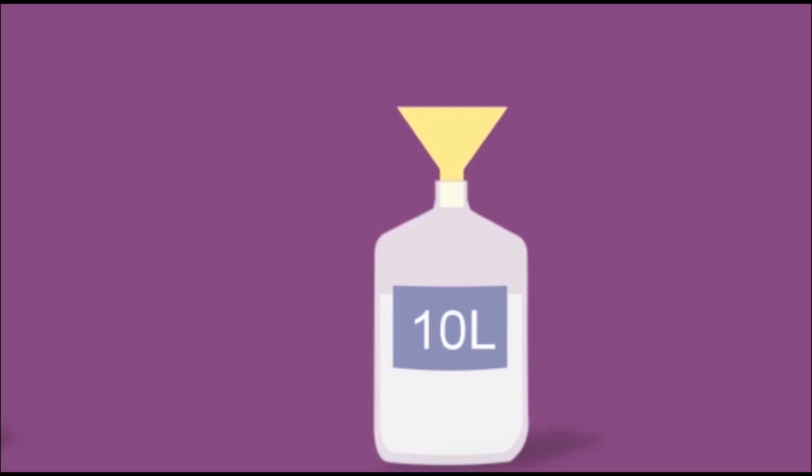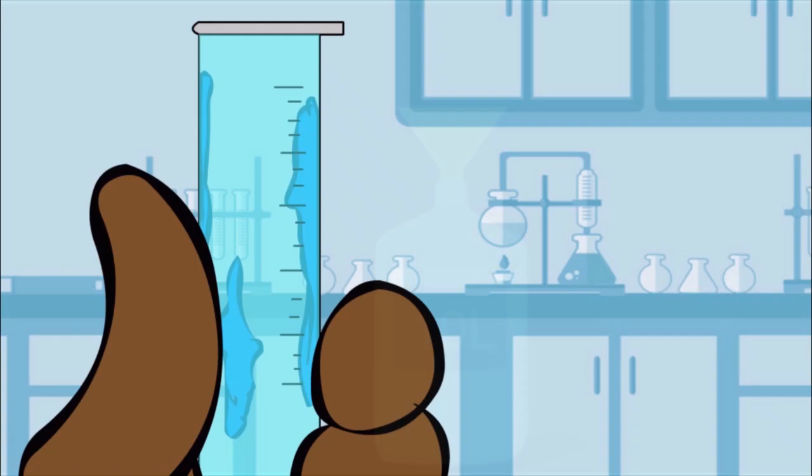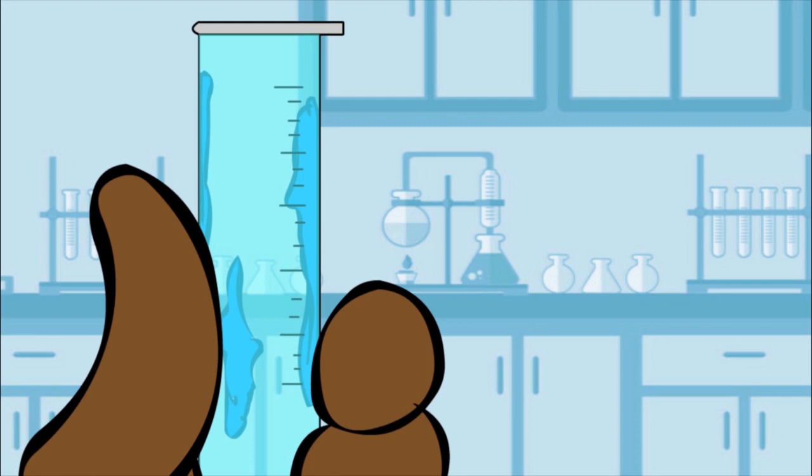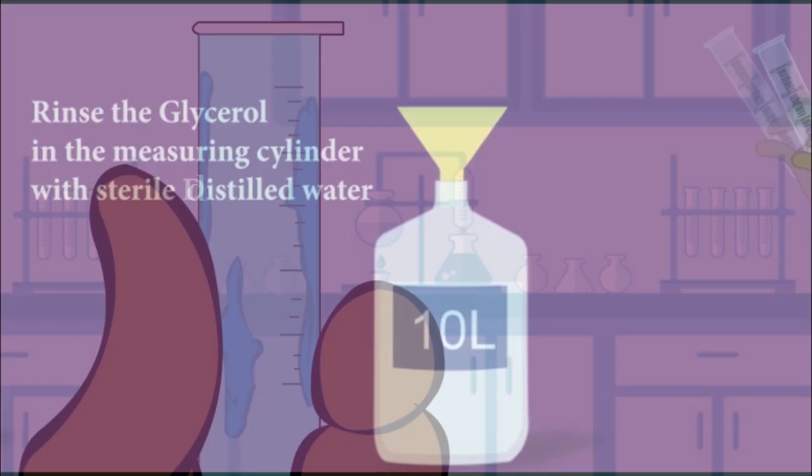Pour in the hydrogen peroxide from the measuring cylinder. Add the glycerol from the measuring cylinder. Remember glycerol is very viscous and sticks to the walls of the measuring cylinder. It should therefore be rinsed with some sterile distilled or cold boiled water and then emptied into the large container.